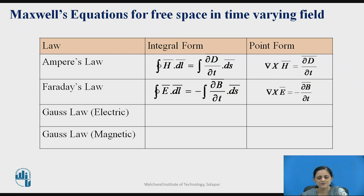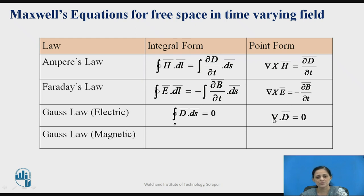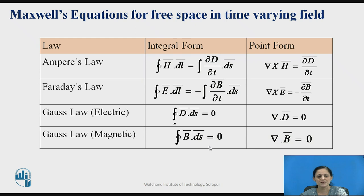By using Faraday's law, we define the Maxwell equation in integral and point form. The third equation, Gauss's law for the electric field, gives: ∮D̄·dS̄ = 0, whereas ∇·D̄ = 0 in point form. The del operator applied along with any vector field is known as the divergence of that field. Gauss's law for the magnetic field gives: ∮B̄·dS̄ = 0 and ∇·B̄ = 0.